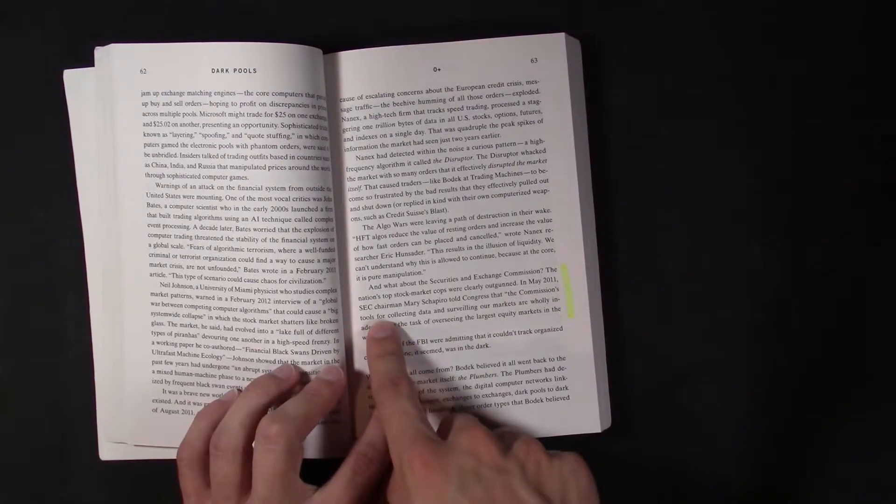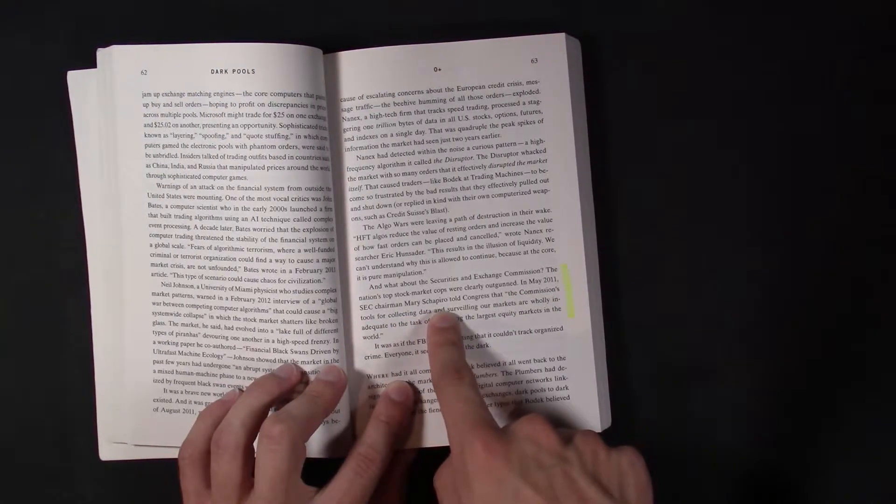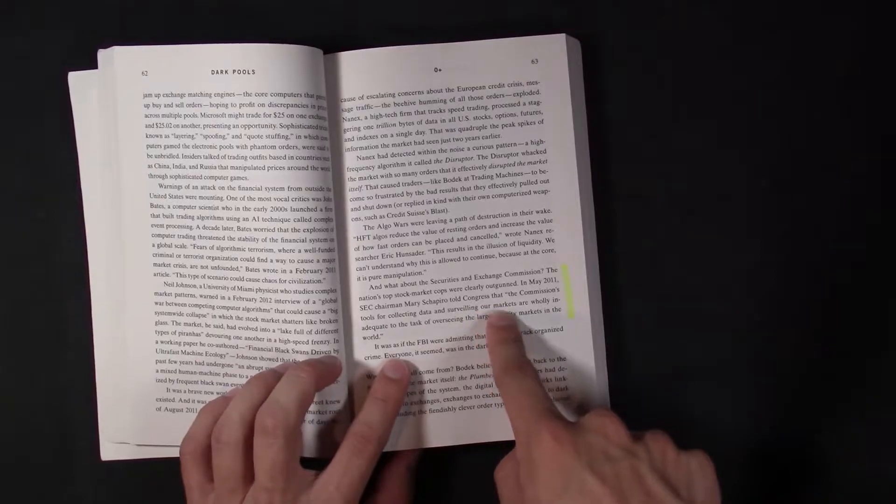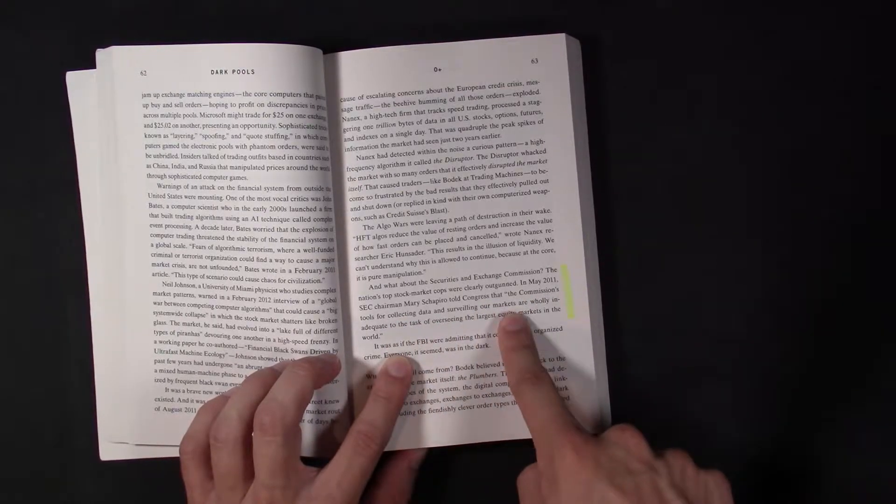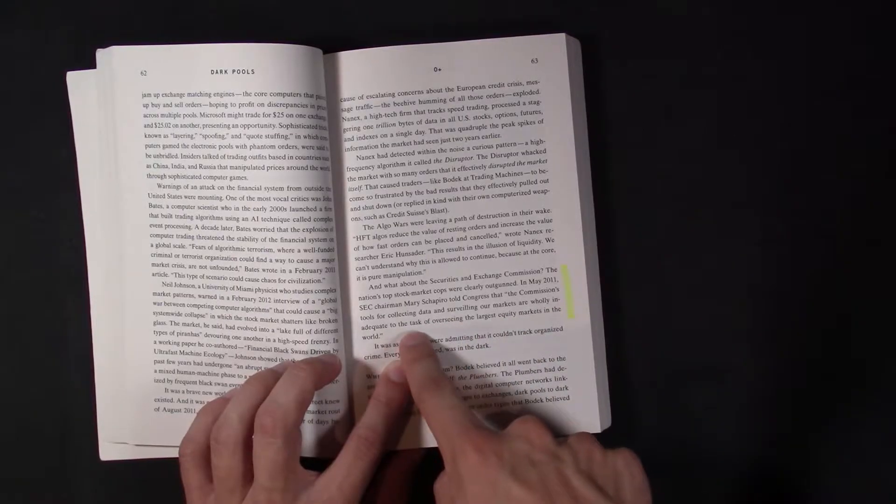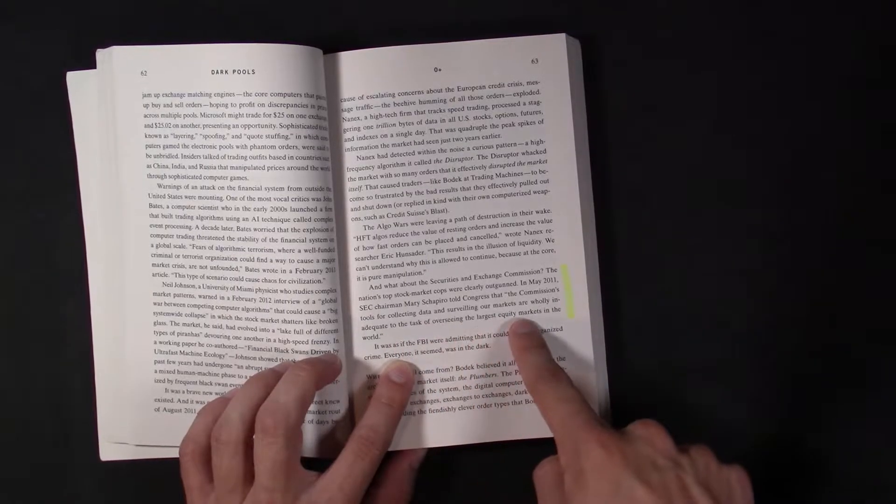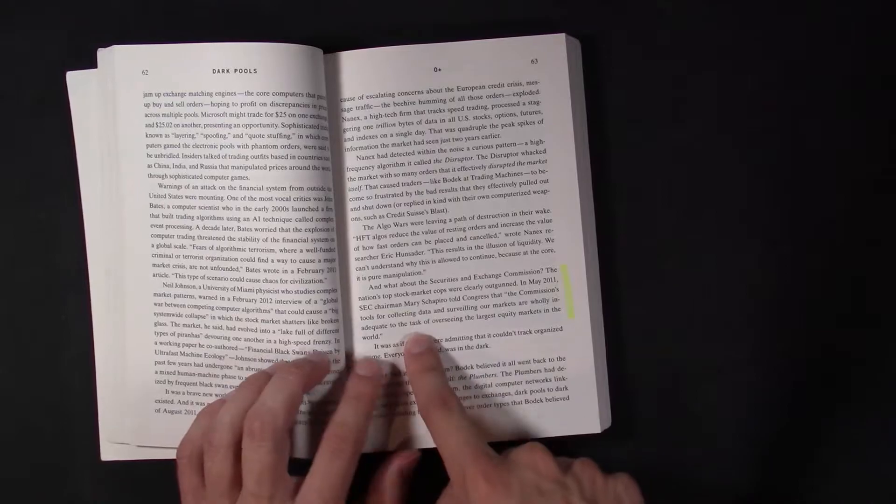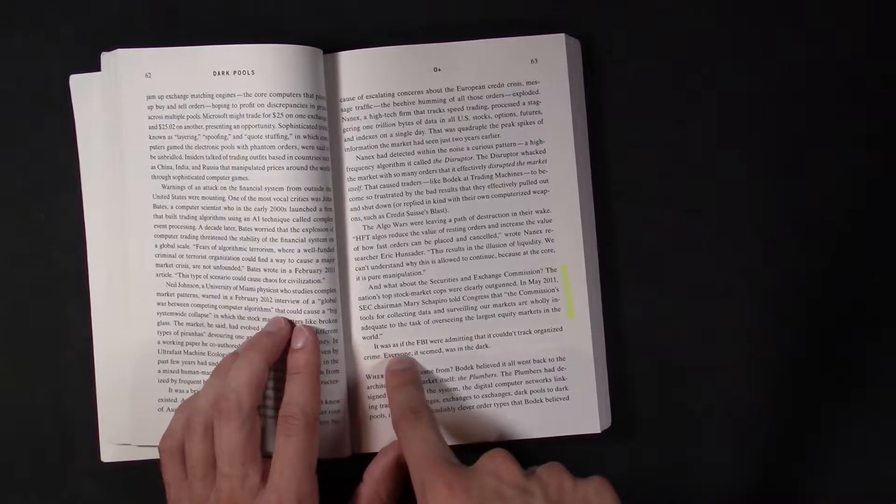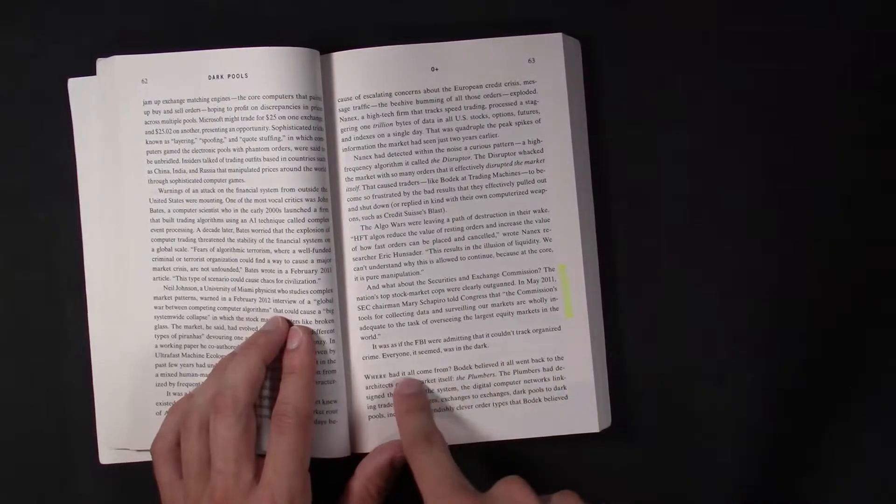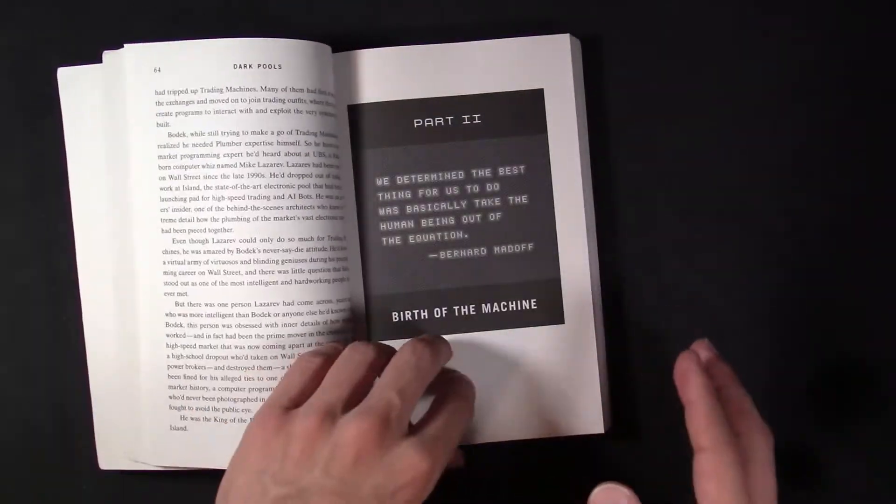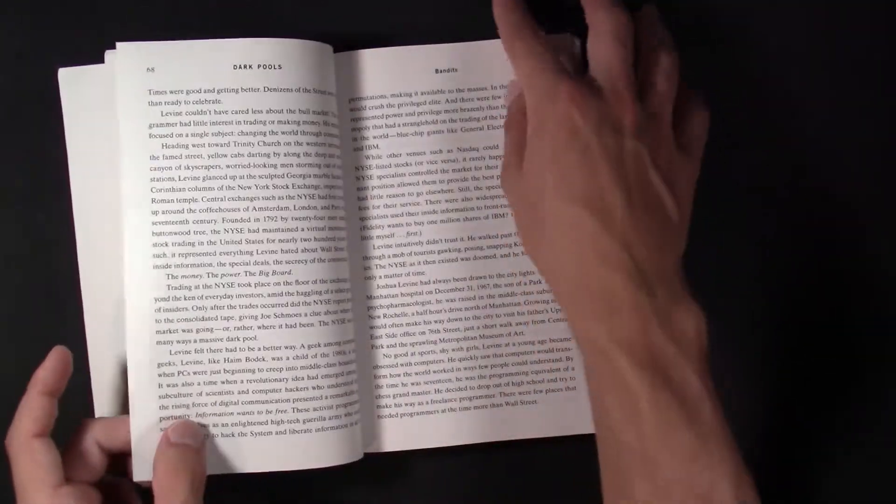So, in May 2012, the SEC Chairman, Mary Shapiro, told Congress that the commissions to over-collecting data and surveying our market are wholly inadequate to the task of overseeing the largest equity markets in the world. Scott said it was as if the FBI admitted that they could not track organized crime. The SEC did not even understand their own market.